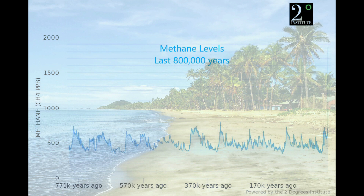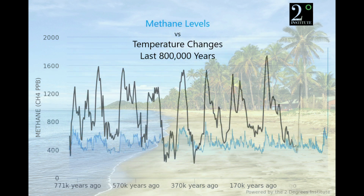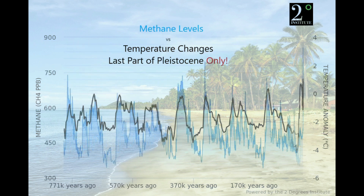Methane levels over the last 800,000 years — notice again the spike at the end. Let's overlay our temperature data. We still have the Holocene in at the end. We can see that they do correspond, and taking out our Holocene, we can see that methane and temperature correspond fairly well with one another.